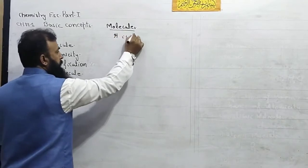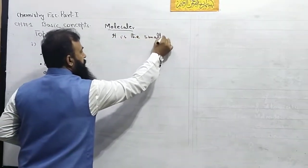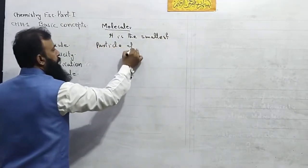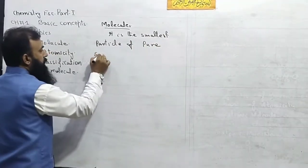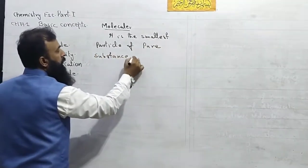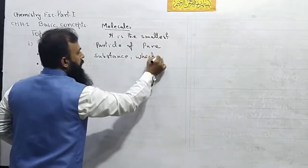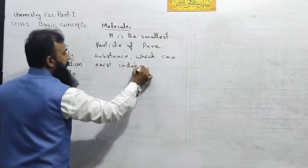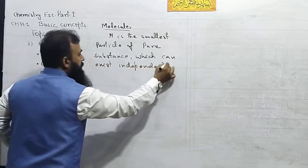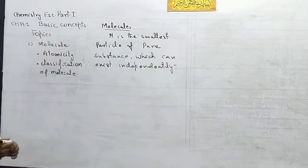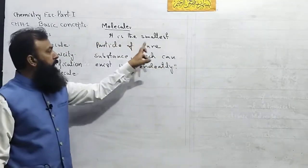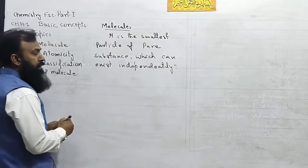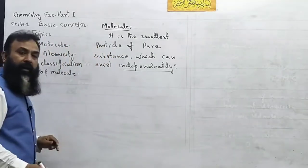A molecule is the smallest particle of a pure substance which can exist independently. The key condition for a molecule is that it can exist independently.